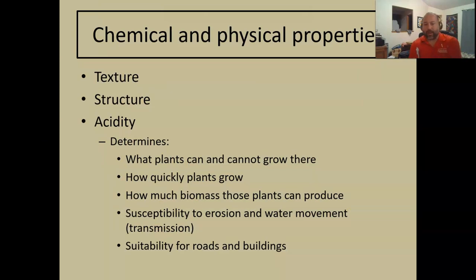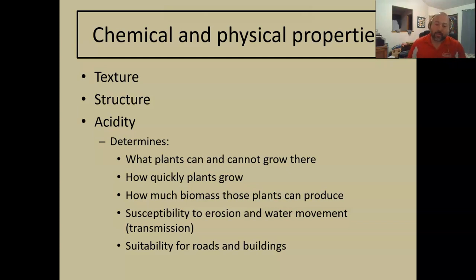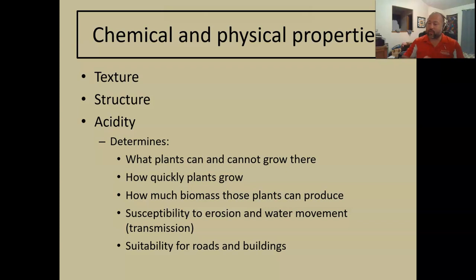Looking at chemical and physical properties of soil, we're going to focus on texture, structure, and acidity. These properties help determine what plants can and cannot grow in a certain area, how quickly those plants can grow, how much biomass they'll produce, susceptibility to erosion and water movement — whether water moves into the soil or just runs off — and suitability for roads and buildings in terms of sitting on a solid structure.